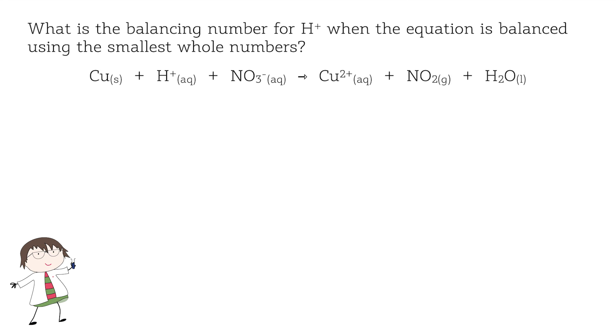Step one is to use oxidation states to figure out what has been oxidized and what has been reduced. So copper starts off with an oxidation state of zero because it's a metal and it ends up as plus two.